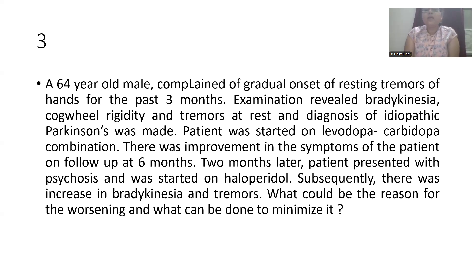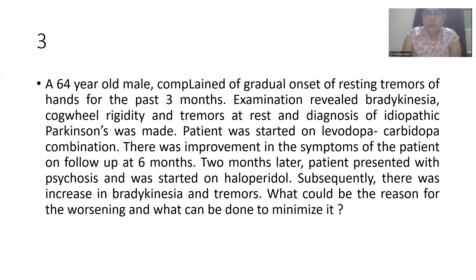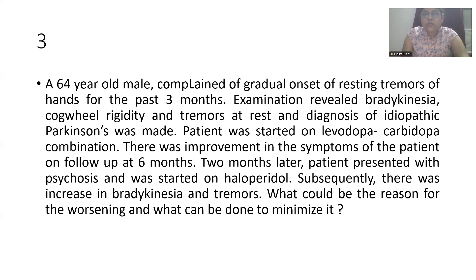A 64-year-old male complained of gradual onset of resting tremors of hands for the past three months. He also revealed bradykinesia, cogwheel rigidity, and tremors at rest, and was diagnosed with idiopathic Parkinson's disease. The patient was started on levodopa and carbidopa combination, and there was improvement in symptoms at the six-month follow-up. Two months later, the patient presented with psychosis and was started on haloperidol. Subsequently, there was an increase in bradykinesia and tremors. What could be the reason for the worsening, and what can be done to minimize it?